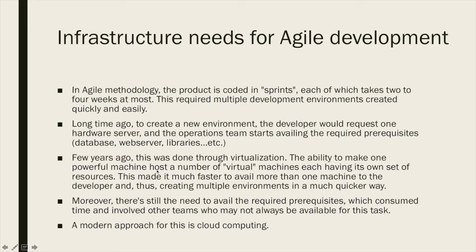This host machine — sometimes called the hypervisor — abstracts the hardware: it abstracts the CPU, the memory, the storage or disks, and the network. Every hardware resource on the machine is abstracted and distributed across a number of smaller machines called virtual machines, each consuming part of those resources. Those virtual machines are completely isolated from each other — they cannot share resources; each has its own set of resources not shared among other machines.